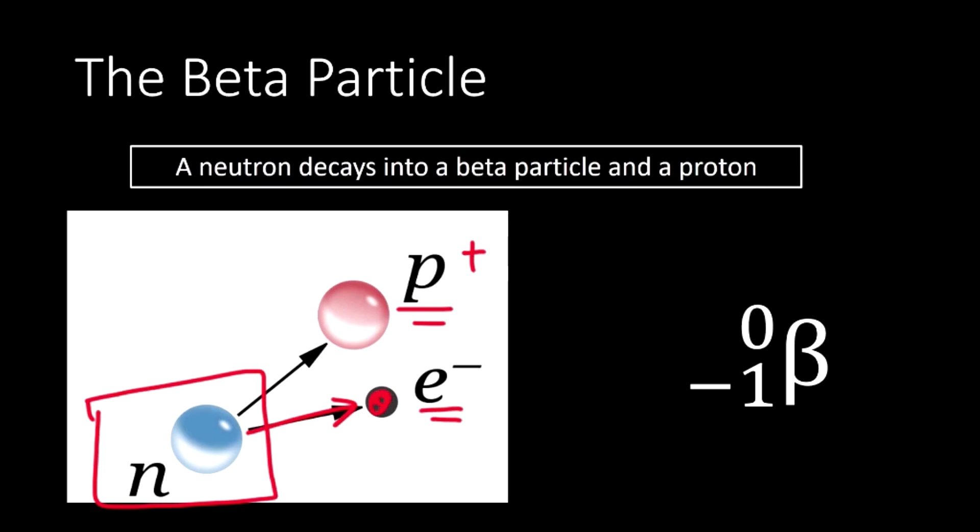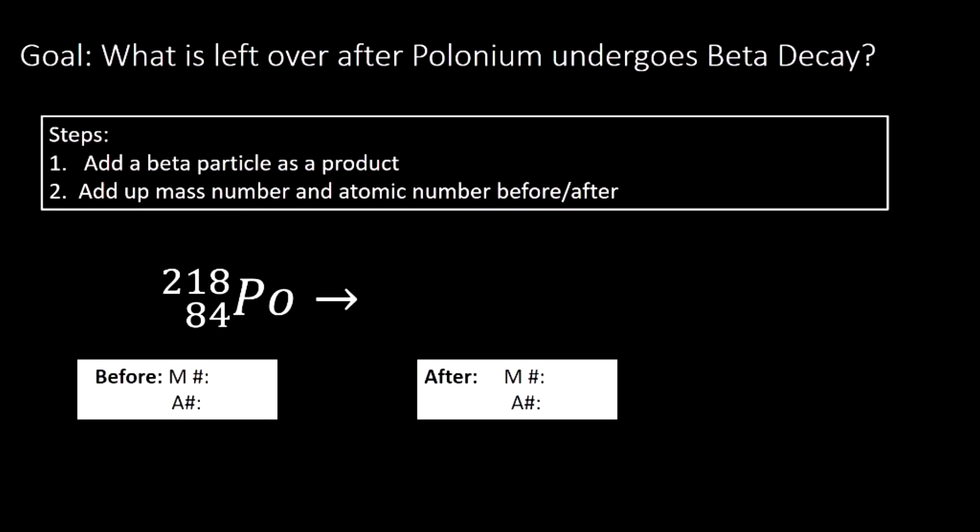Let's learn how to predict the products of a beta decay reaction. Here we have the element polonium, and our goal is to figure out what's left after polonium undergoes beta decay. In our last video on alpha decay, we saw a sequence of alpha decays that radium underwent. Eventually we got to polonium, which actually undergoes beta decay. We're going to look at what polonium becomes when it undergoes beta decay.